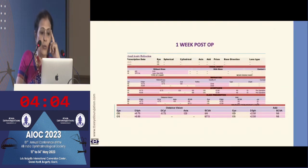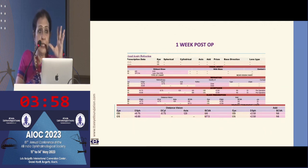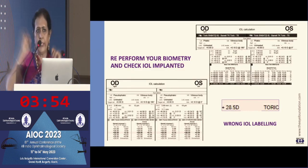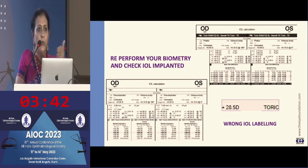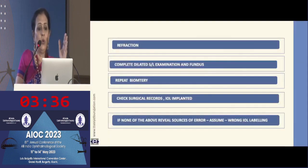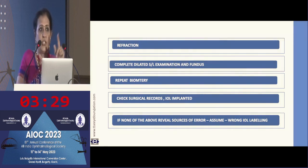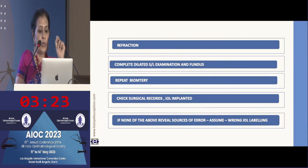When determining what went wrong: a patient came one week post-op with a plus 8 diopter refractive surprise. Before removing the lens, you need to review the pre-op and post-op scans, the IOL labeling, your EMR entry, and where the error occurred. You must do and repeat refraction with another optometrist, perform fundus evaluation to check for CME, review surgical records, and only if everything confirms a wrong IOL should you remove it.